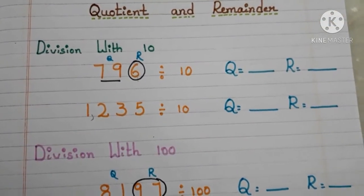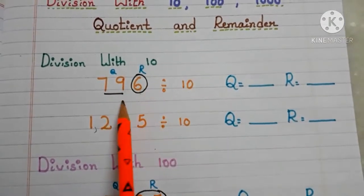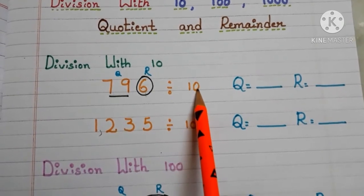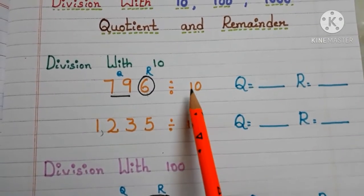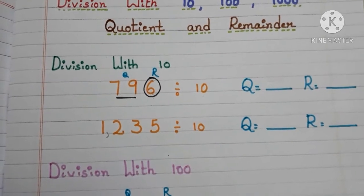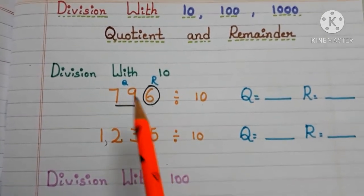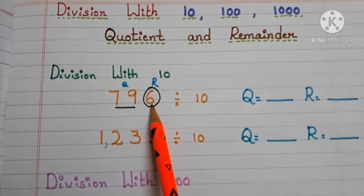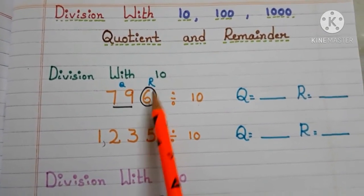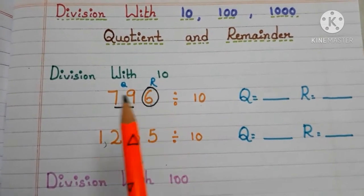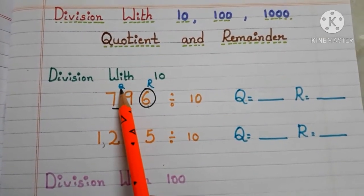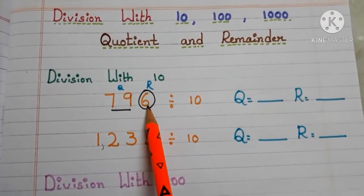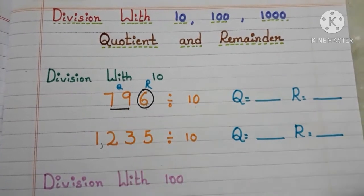Let us start the division with 10. Here we have our first example: 796 divided by 10. In the number 10, how many zeros are there? Only one zero is there. So in the number 796, the last digit — the digit which is in the one's place — becomes the remainder, and the remaining digits become the quotient. So 6 is the remainder and 79 is the quotient.